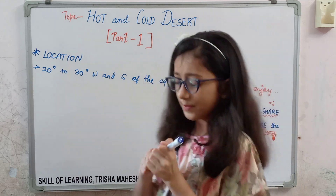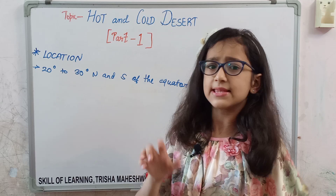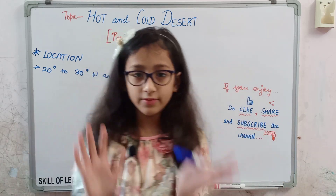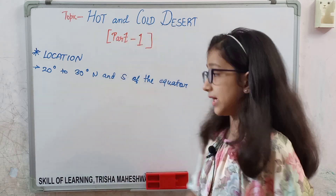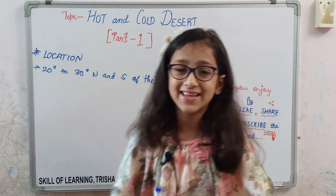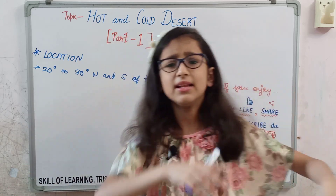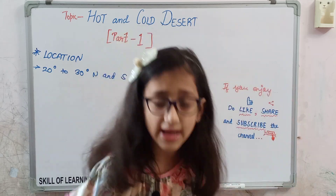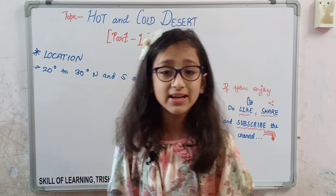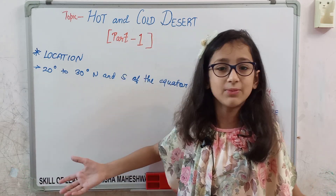The second point is that hot deserts are on the leeward side — a new word. Leeward is a place that is away from the winds. The winds are there but they are completely dry. Now, why are deserts so dry? The rain-bearing winds come from the northeast and the southeast, but the journey is too long, so by the time they reach the west side they are completely dry.